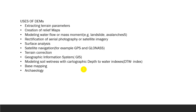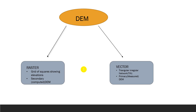Some other uses of digital elevation model include: extracting terrain parameters, creation of relief maps, modeling of water flow or mass movement such as landslides and avalanches, rectification of aerial photography or satellite imagery, surface analysis, satellite navigation such as GPS and GLONASS, terrain correction, GIS modeling, soil wetness and cartographic depth-of-water indices, base mapping, and archaeology.